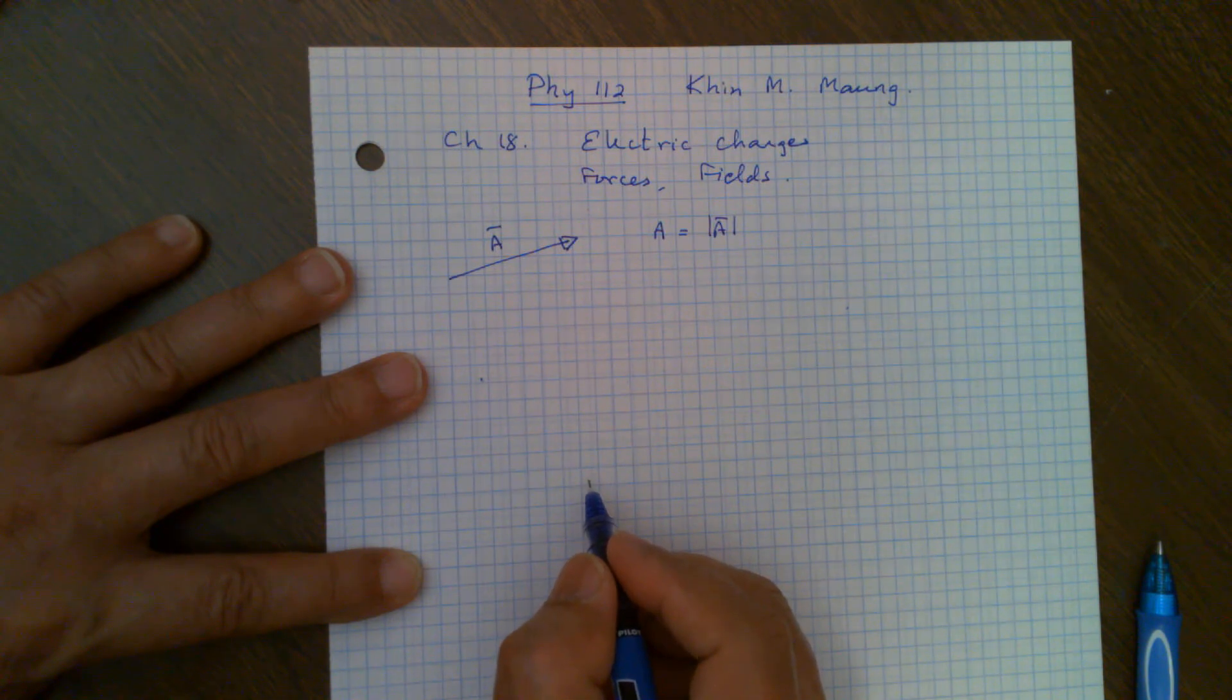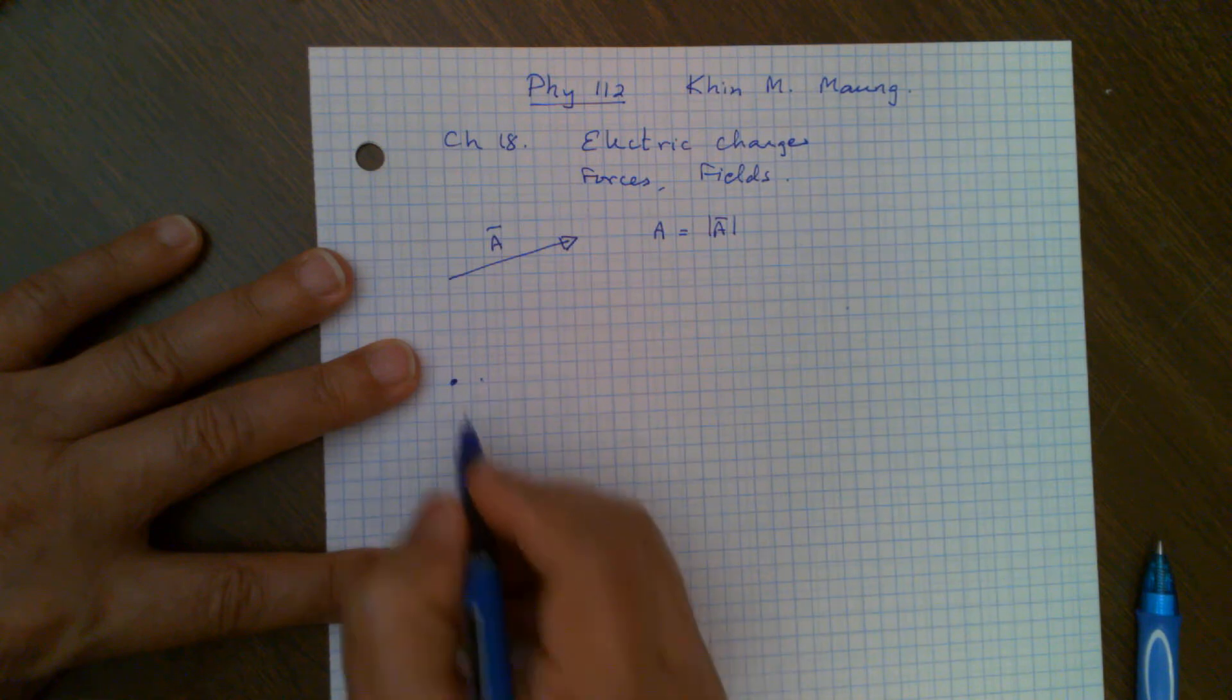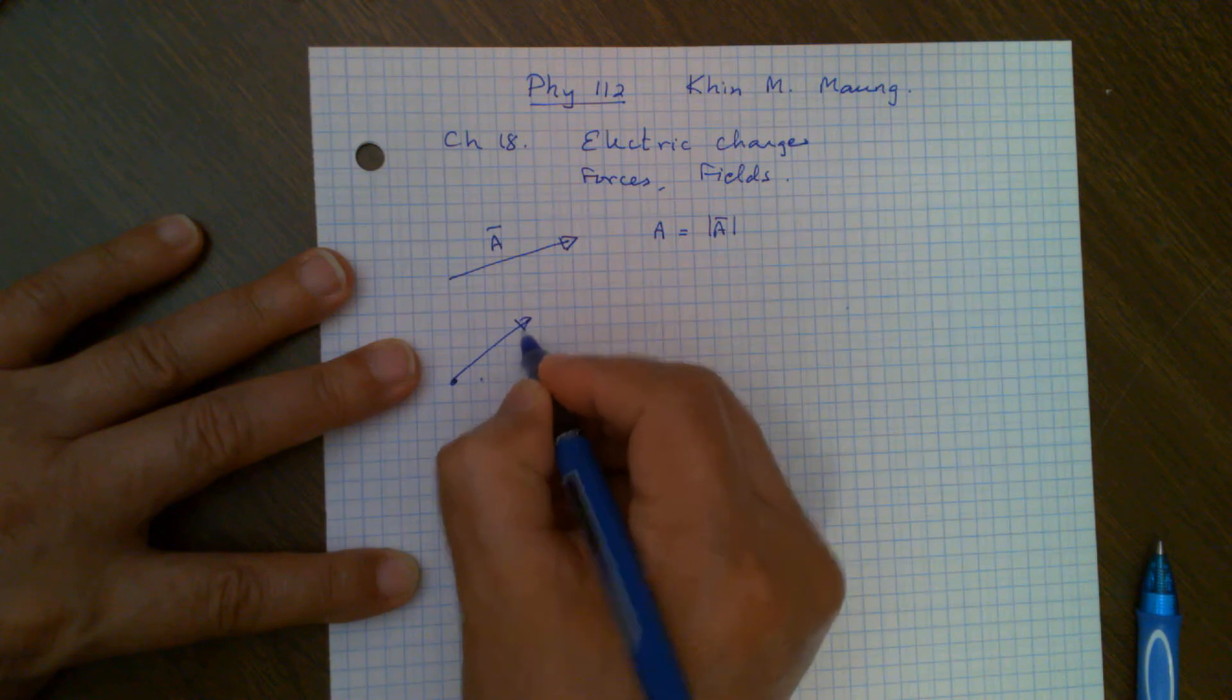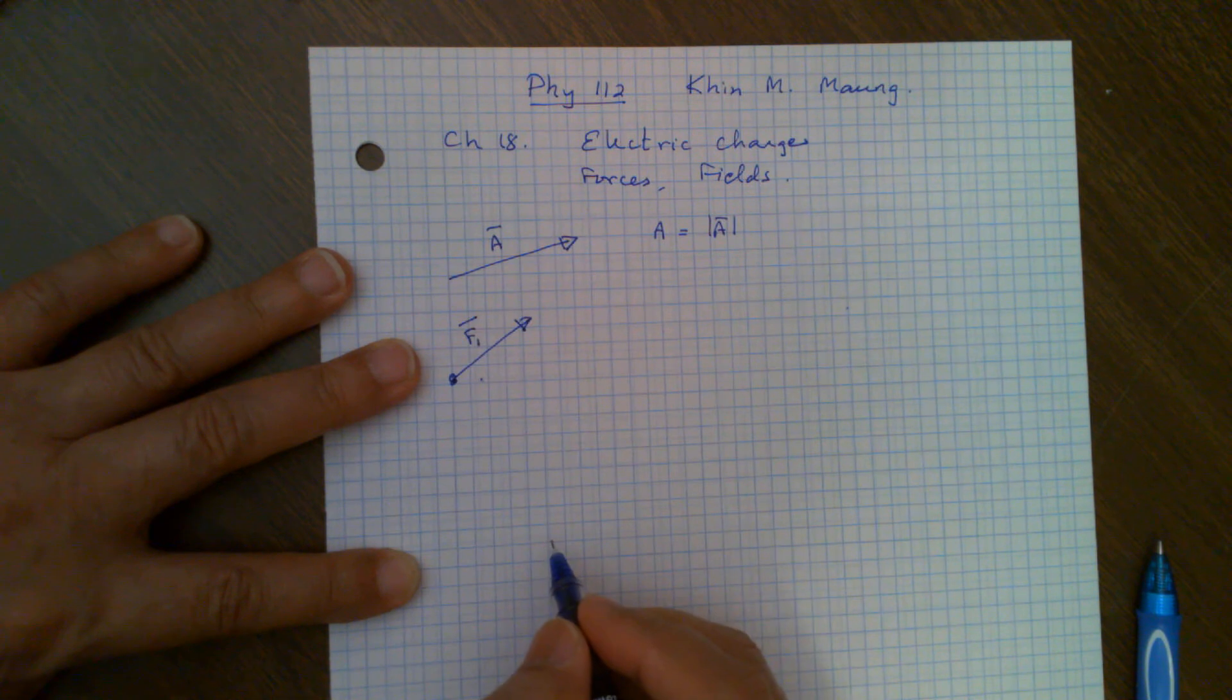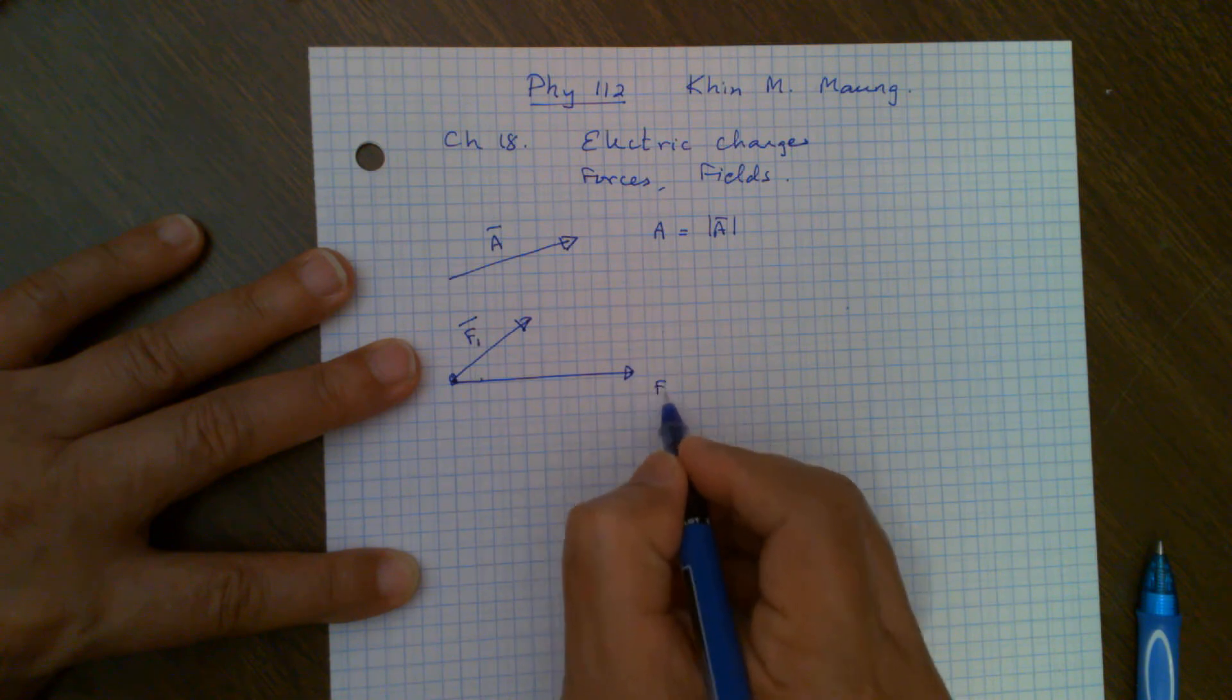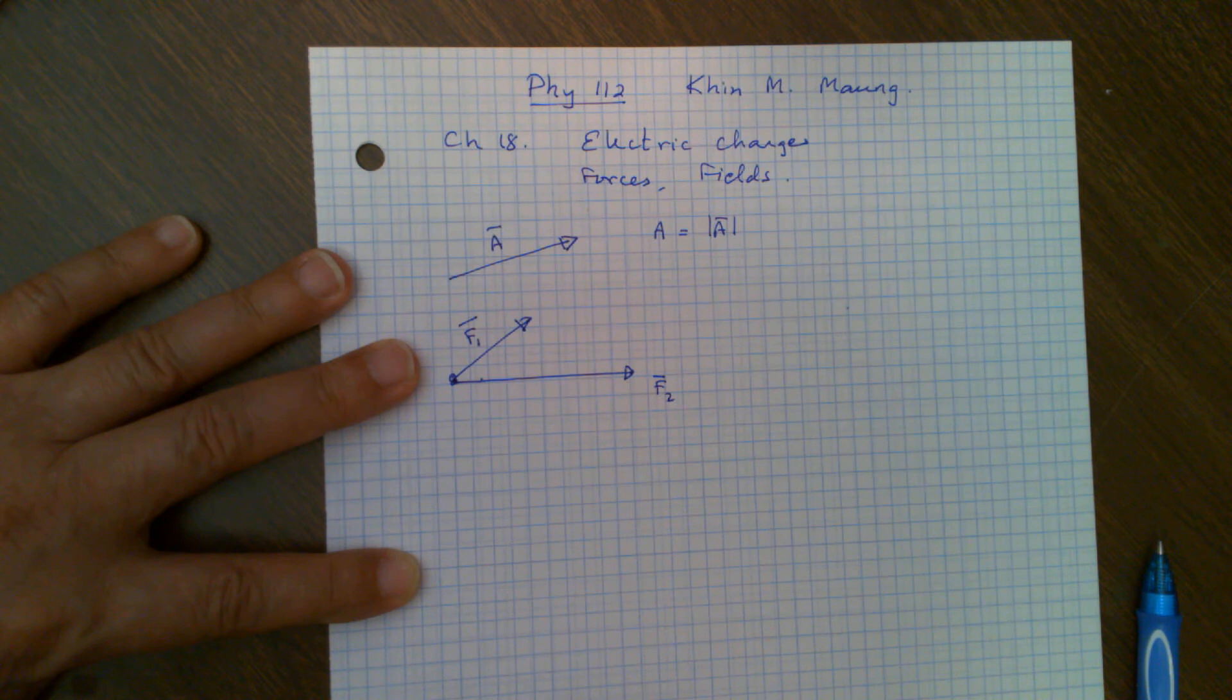Now, why do we need to know how to add vectors? Think about this. Let's suppose you have an object. I am drawing a little dot. And two people are pulling on this. One in this direction with let's say force F1. So I write a vector F1. And then another one in this direction, different magnitude and different direction, force F2.